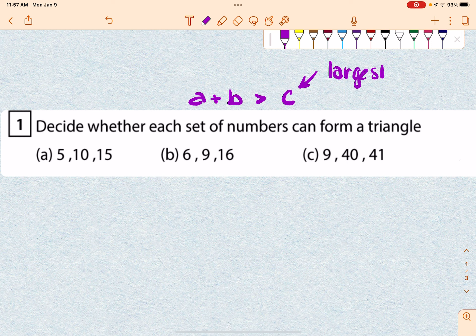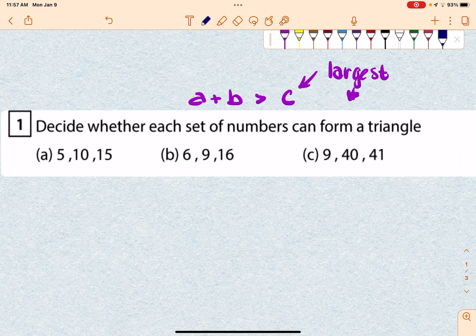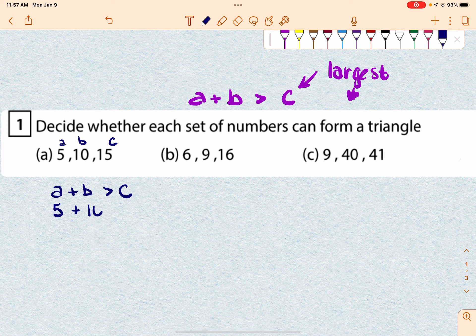Now, you can do it with any of these, but that's usually the easiest way to compare them. So if I look at A, I have 5, 10, and 15. So 15 would be the largest. I'm going to make that C and make these A and B. So A is 5, B would be 10, and C would be 15.